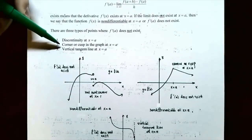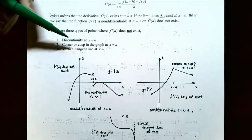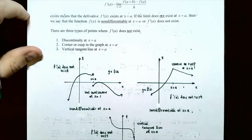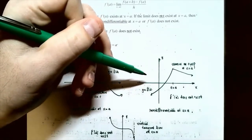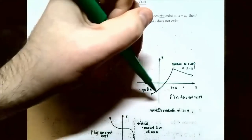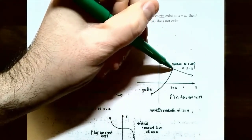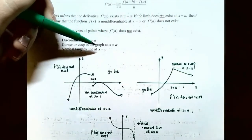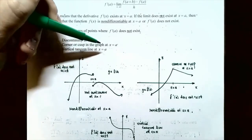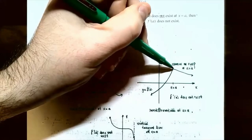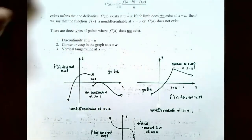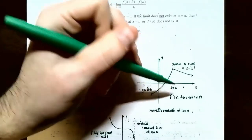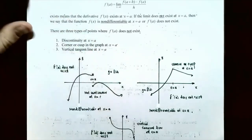Second reason: if the graph has a corner or a cusp at x equals a, then the function does not have a derivative there. The graph juts into a sharp point and then juts out very quickly — it's not a nice gradual curve. It doesn't gradually increase and decrease; it juts into that point and out. At such a corner or cusp, the function is non-differentiable at x equals a.